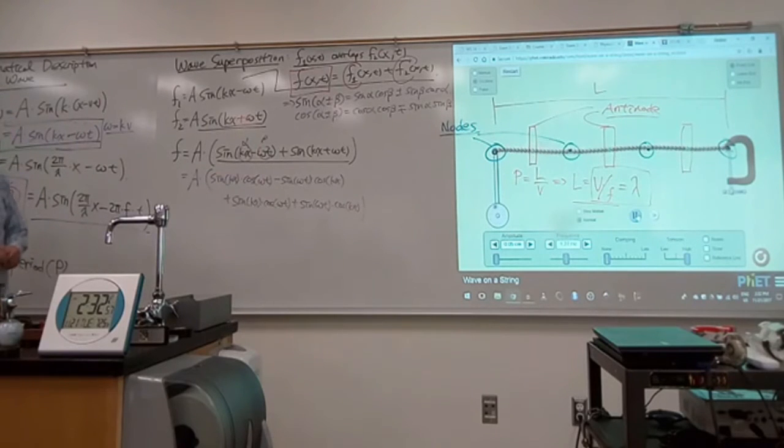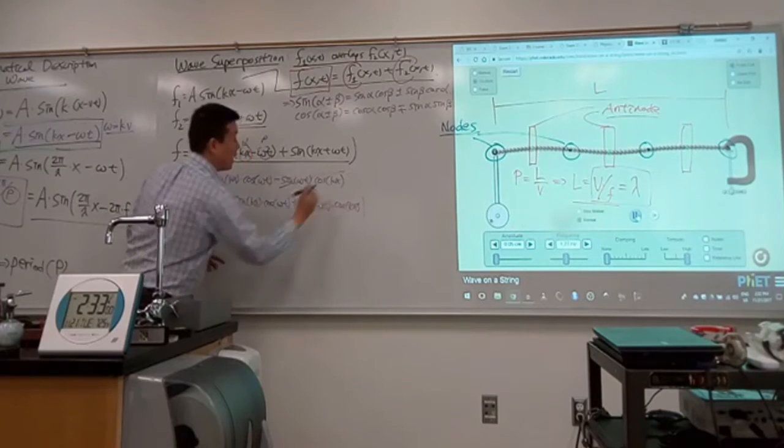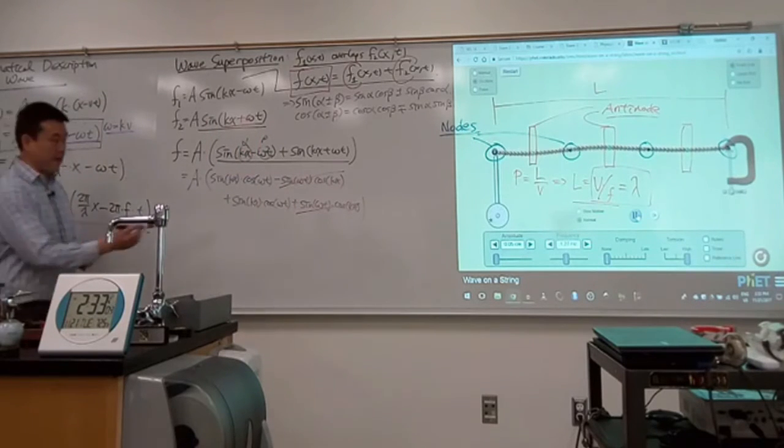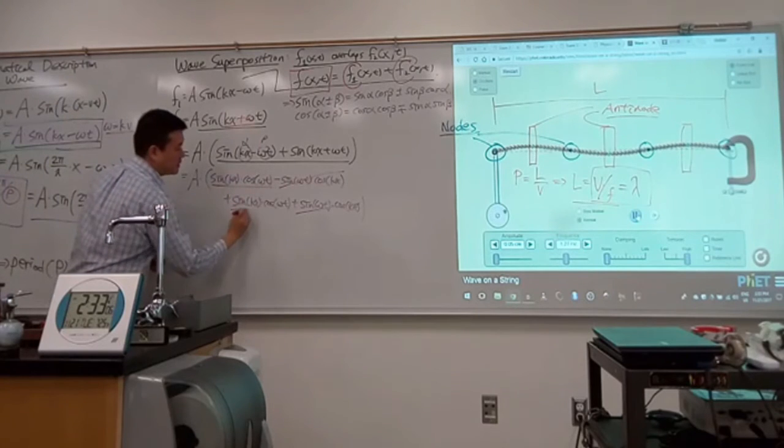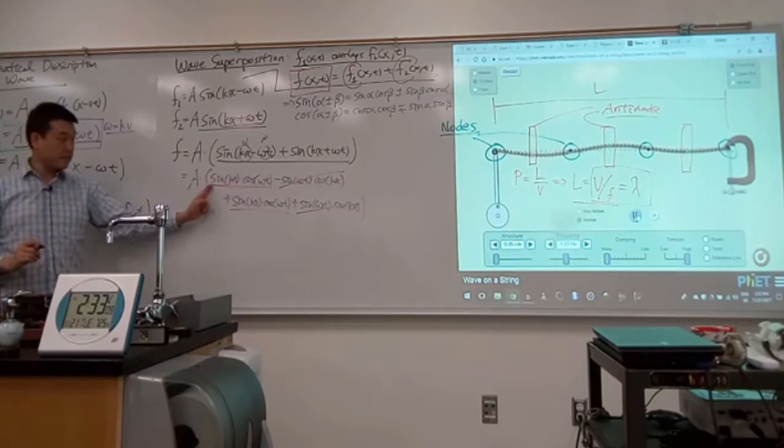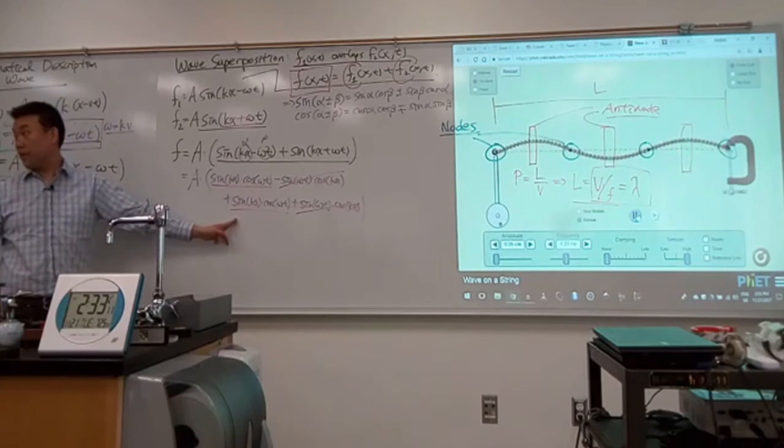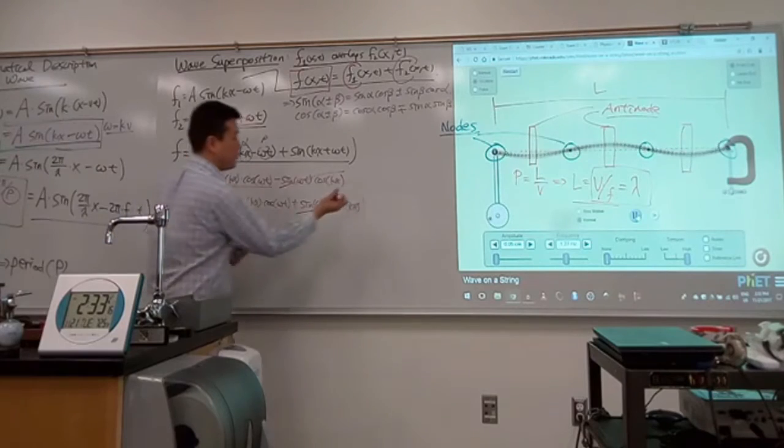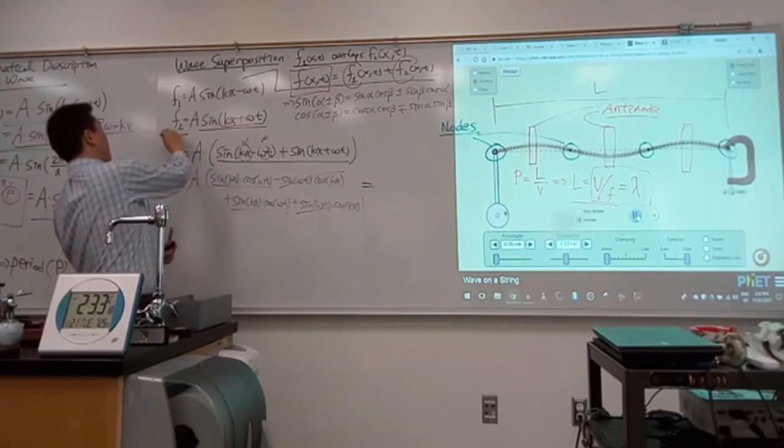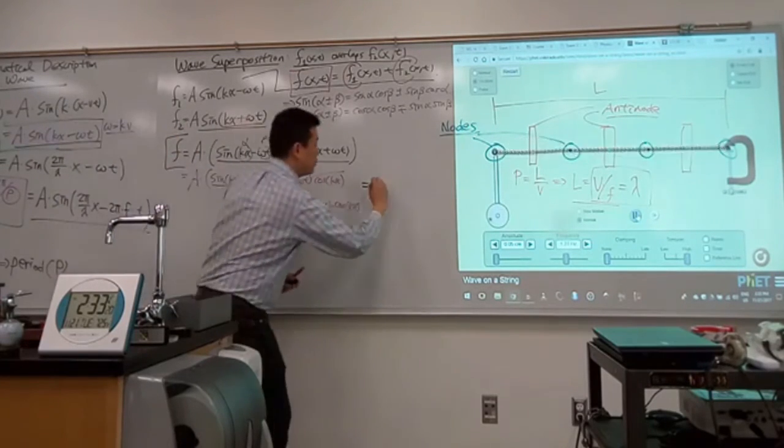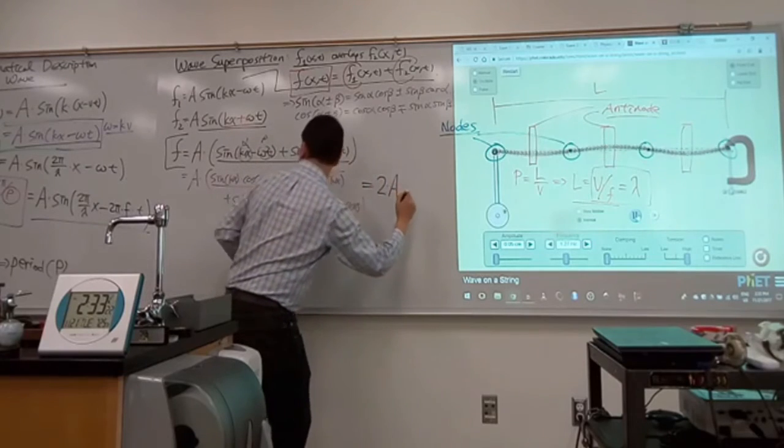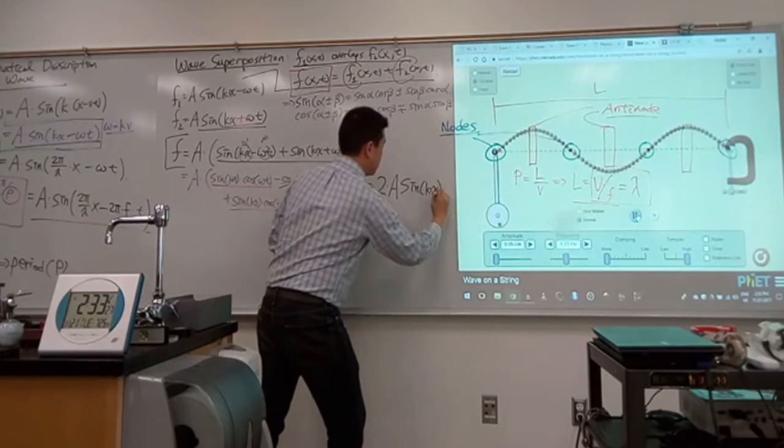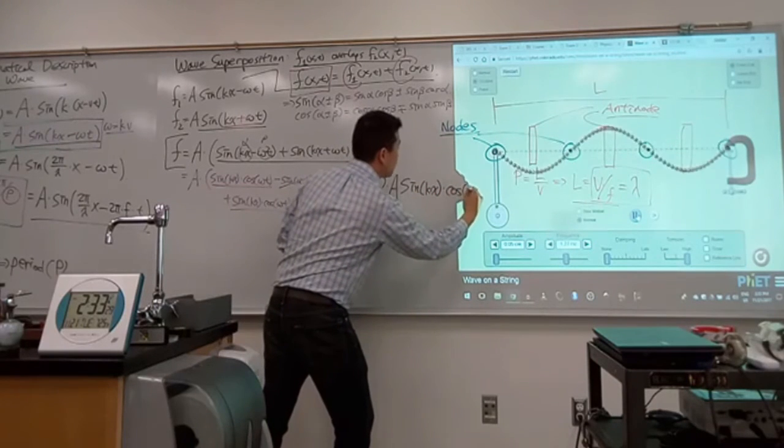And when you look at the remaining term, they are exactly the same as each other. So this plus that is just double one of them. So when you simplify all of this, this is what you end up with. Let me write that this function f here is equal to 2 times a, sine of kx times cosine of omega t. Now, does this represent the shape that you are seeing?